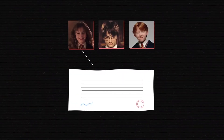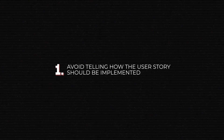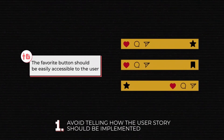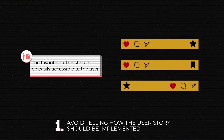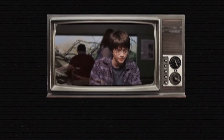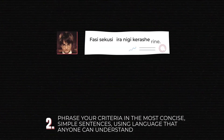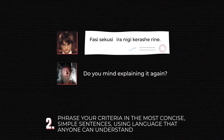If you've been tasked with writing acceptance criteria, there are a few things to know. First, avoid telling how the user story should be implemented — your focus is on what happens. Leave some space for developers to explore the best ways to transform the intent into the final product; they might get very creative. Next, phrase your criteria in the most concise, simple sentences using language that anyone can understand. People with no technical background, managers, and stakeholders should have the same understanding as the devs.